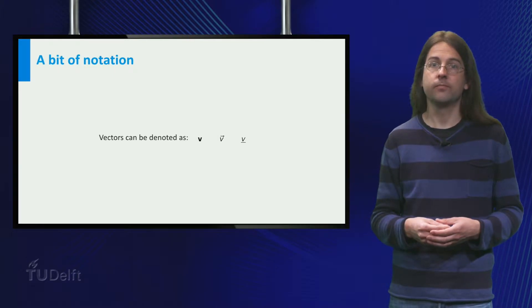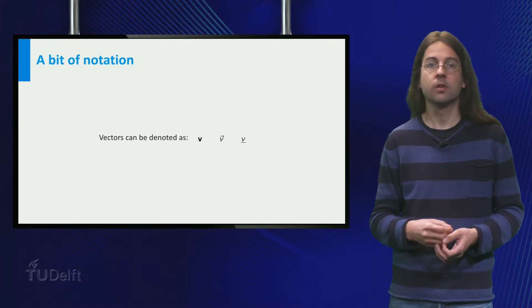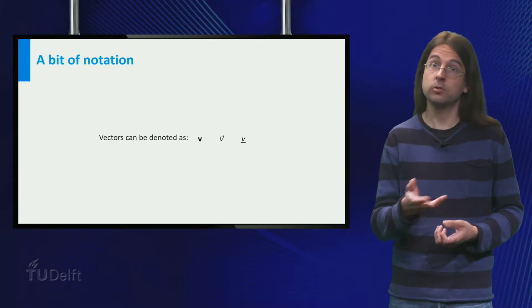First a little bit about notation. As vectors are not numbers, we want to easily be able to distinguish between them. Thus we typically use some sort of special notation to warn that we are dealing with a vector. In print, vectors are often printed boldface and upright, as opposed to italic.